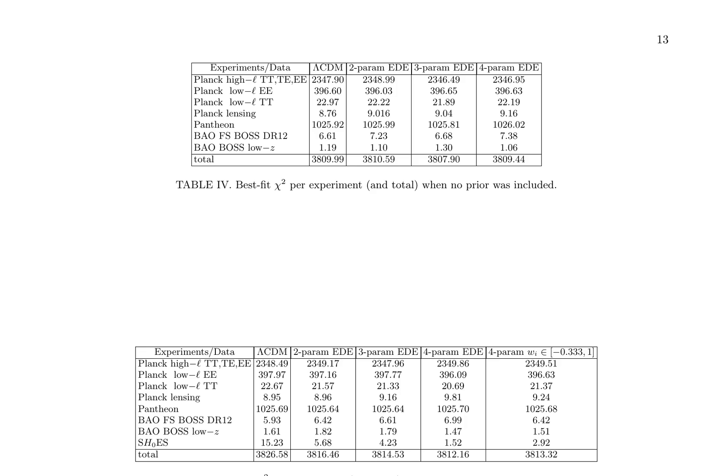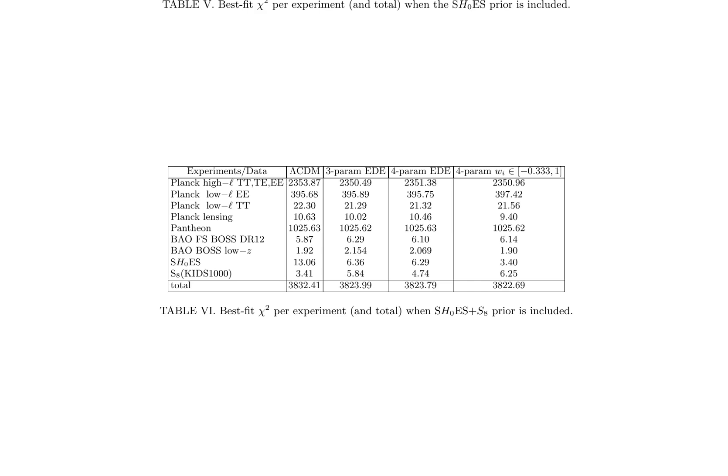The provided tables present chi-squared values for various cosmological models, including lambda-CDM, 2-parameter EDE, 3-parameter EDE, and 4-parameter EDE, with and without priors from SH0ES and S8. Data from Planck High and Low-ell TT, TE, EE, Lensing, Pantheon, BAO from BOSS DR12, and SH0ES is included. Lower chi-squared values indicate a better fit to the data. The tables demonstrate how priors affect the fit, particularly in Planck Low-ell TT and Lensing data, crucial for understanding model performance and the impact of external priors.